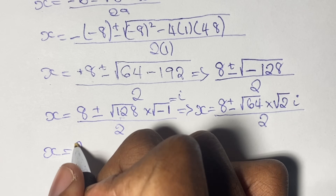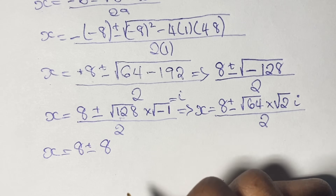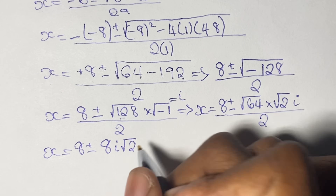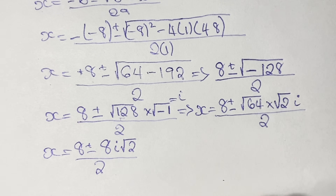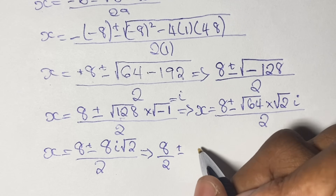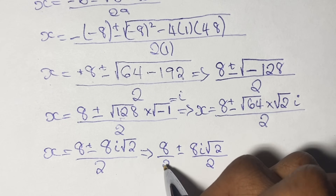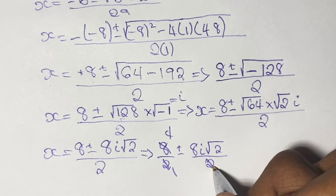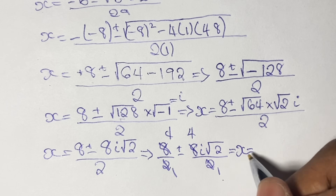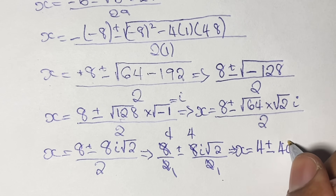Simplifying further, x equals 8 plus or minus — and since the square root of 64 is 8 — we get 8 times i times the square root of 2, all divided by 2. Splitting the fraction, we have 8 over 2 plus or minus 8i root 2 over 2, which gives us x equals 4 plus or minus 4i times the square root of 2.